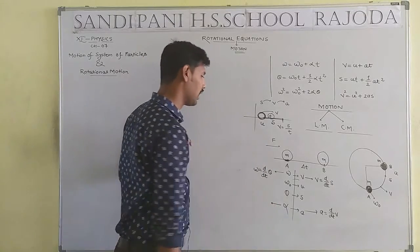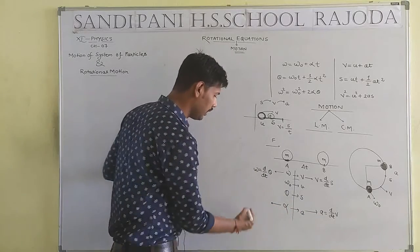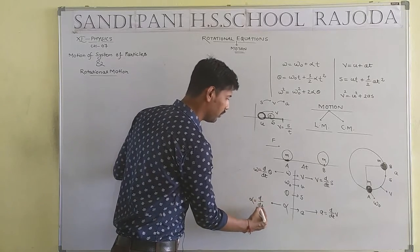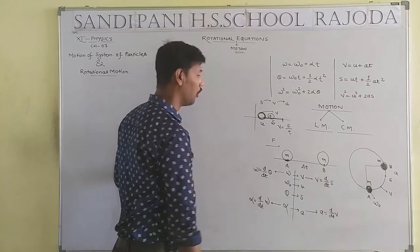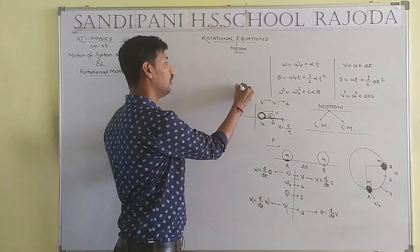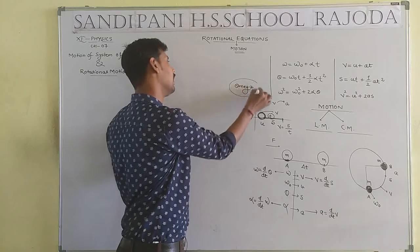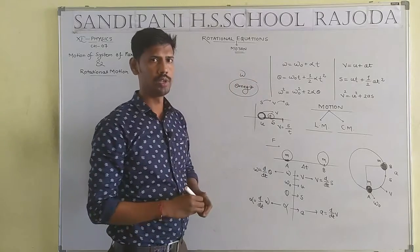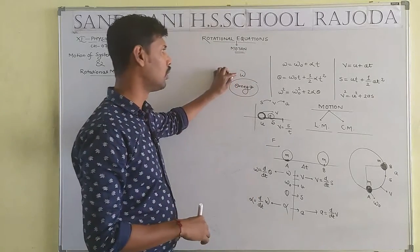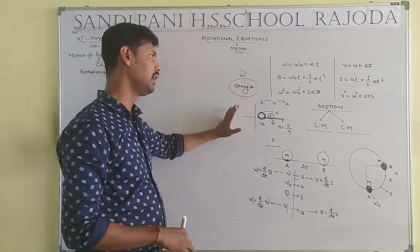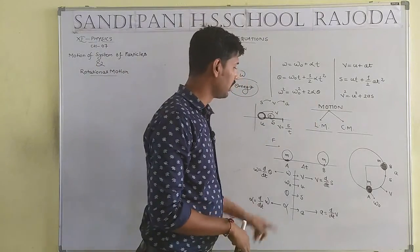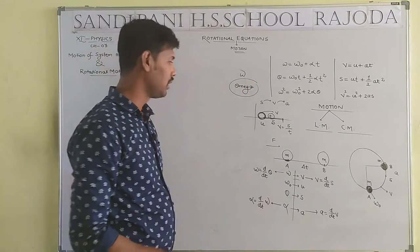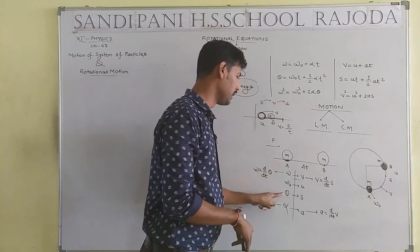Here, acceleration a is replaced by alpha (α), so alpha = dω/dt, where v is represented by omega (ω). Linear motion is defined by v, u, s, and a. Rotational motion is defined by omega (ω), omega naught (ω₀), theta (θ), and alpha (α). Theta means the displacement under circular motion.